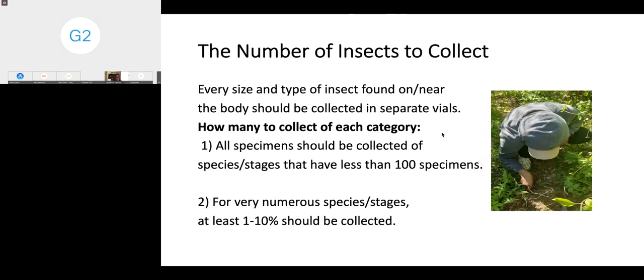From the body, you want to collect all the natural orifices, any wounds, underneath the body, inside the body and shoes. If a body was wrapped in a carpet or some other material, you want to check that thoroughly. From the outside, you want to collect very thoroughly because a lot of these insects disperse away from the body after they have fed. Between two and 10 meters from the body, look under stones and logs, catch any flying insects, dig soil samples at least 10 centimeters deep.